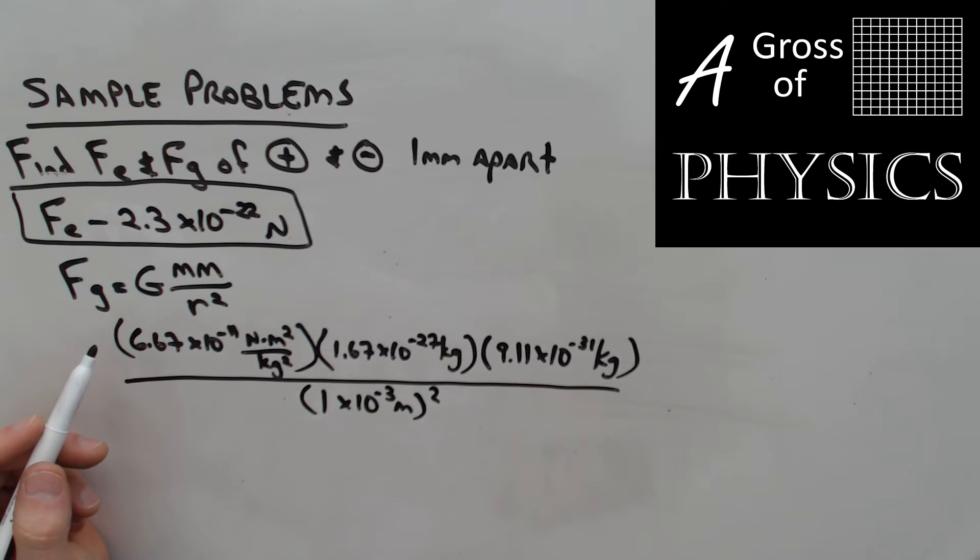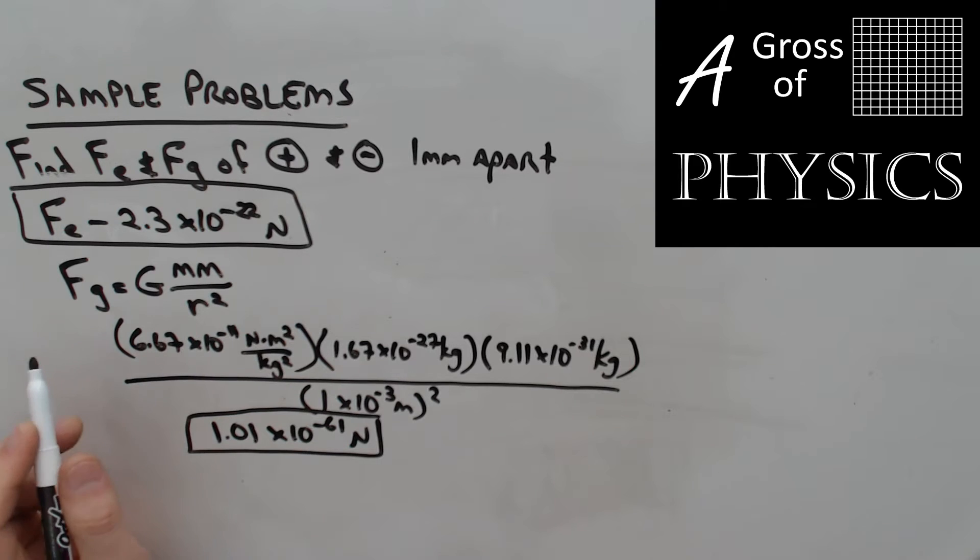So let's look at the calculator again. 6.67E-11 times 1.67E-27 times 9.11E-31, divided by 1E-3 squared. My final answer is 1.01 times 10 to the negative 61 Newtons. So the gravitational force is much smaller than the electrostatic force. This is an attractive force.